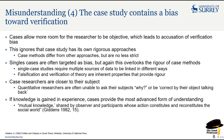The fourth misunderstanding is that the case study contains a bias towards verification. This comes about because case study allows more room for the researcher to be subjective, which leads to accusations of verification bias, as you can choose what to look at. This ignores that case study itself has its own rigorous approach — it is not the same as other forms of study, and case study methods are no less strict. Single cases are often targeted as biased, but this overlooks the rigour of case methods. Single case studies require multiple sources of data for triangulation. Quantitative researchers are often unable to ask their subject why they answered a survey question in a particular way, and cannot be corrected by their object.